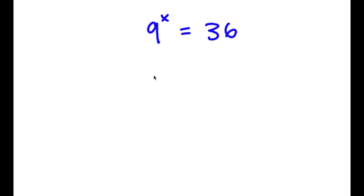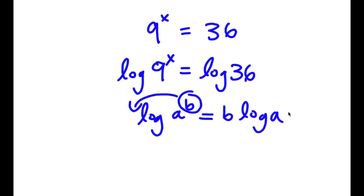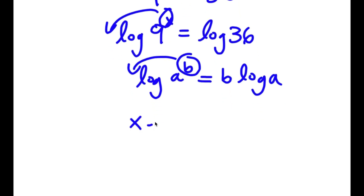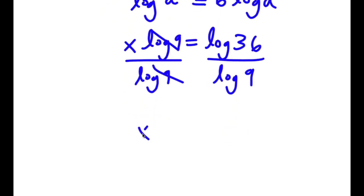In this problem, I have 9 to the power of x is equal to 36. I'm going to take the log on both sides: log(9 to the power of x) is equal to log 36. Using the log power rule, I can move x to the front, giving x times log 9 is equal to log 36. Dividing both sides by log 9, these two cancel out and I have x is equal to log 36 over log 9.